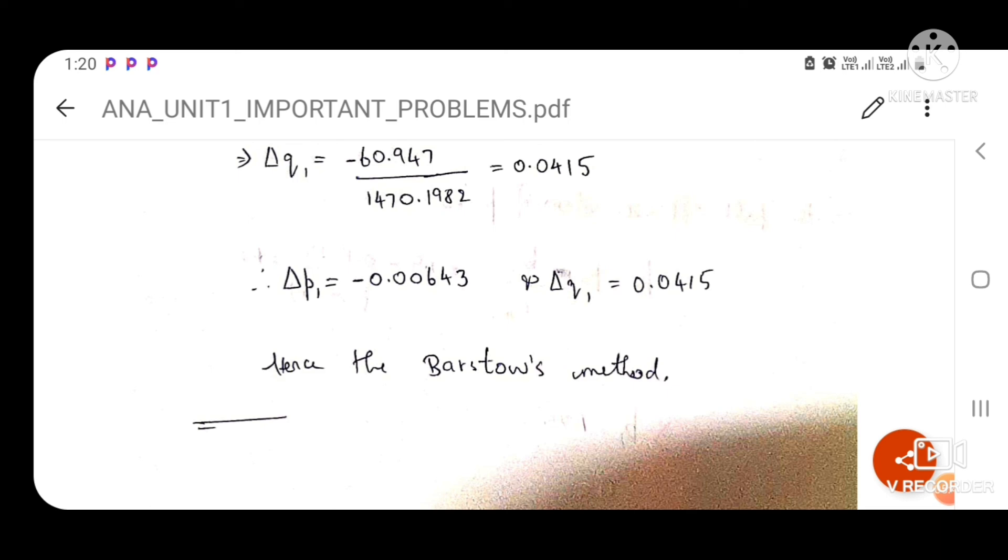This actually is the Bairstow's method, hence the solution. Del P1 and del Q1, this is what we needed to find out. Basically, we have solved the Bairstow's method by finding out the solutions del P1 and del Q1.